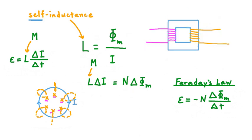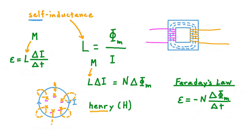Say we have a transformer consisting of a core and a primary and secondary circuit. If the current in the primary circuit changes in time, that creates a changing magnetic field transmitted by the core through the coils of the secondary circuit. Through mutual induction between these circuits, EMF and then current will be induced in the secondary circuit. Whether we're talking about mutual or self-inductance, the unit for inductance is the same — it's the Henry, named after Joseph Henry, abbreviated capital H.